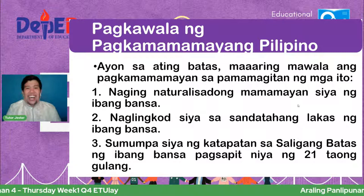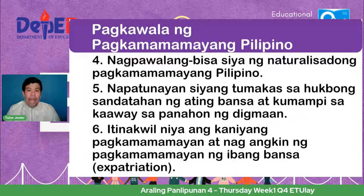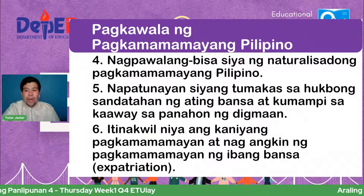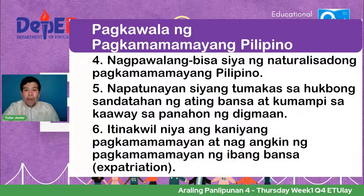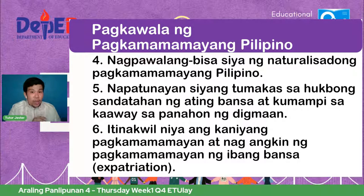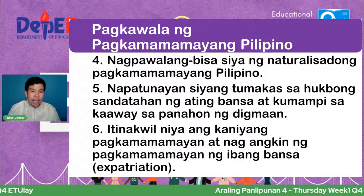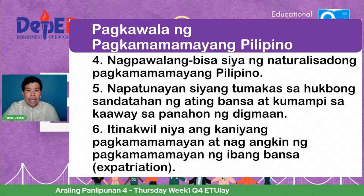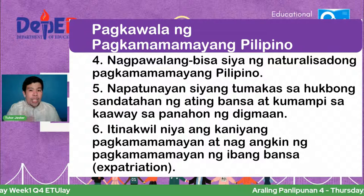Ikaapat, nagpawalang-bisa siya ng naturalisadong pagkamamamayang Pilipino. Ikalima, napatunayan siyang tumakas sa sandatahan ng ating bansa at kumampi sa kaaway sa panahon ng digmaan. Ika-anim, itinakwil niya ang kanyang pagkamamamayan at nag-angkin ng pagkamamamayan ng ibang bansa — tinatawag natin ito sa Ingles na expatriation. Sana nga wala — patuloy lang nating mahalin at i-embrace ang ating pagiging Pilipino.